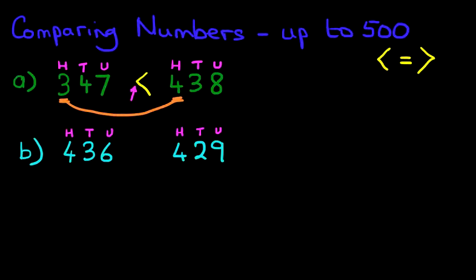The first thing we do is look at the digit on the left. In this case, it's the hundreds. So we've got 400 here and we've got 400 here. So we're making a direct comparison, the 4 and the 4. Here the digits are exactly the same. So therefore, we cannot answer the question just by looking at the hundreds.